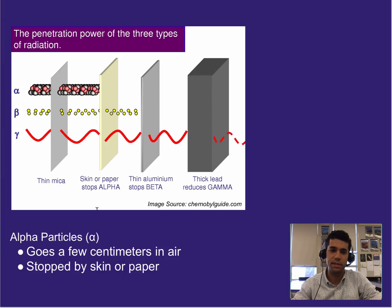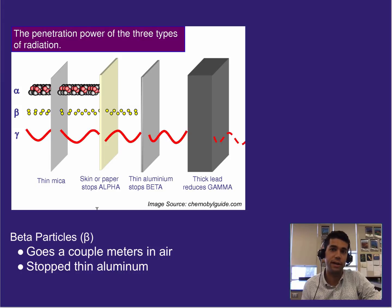Beta particles, because they are a little bit smaller and less charged, go a little bit further in air. It's also because they're moving faster as well. So they'll go about a couple meters in air, between one and three meters are what most reports say. They can effectively be stopped by a thin sheet of aluminum. So you think like a really thick aluminum foil or just kind of like a thin plate of aluminum or a can wall of aluminum or whatever for like a soda can. And that effectively would stop beta particles.